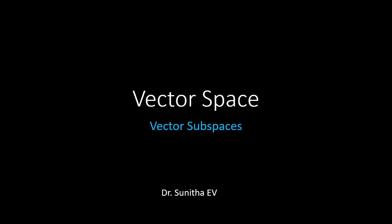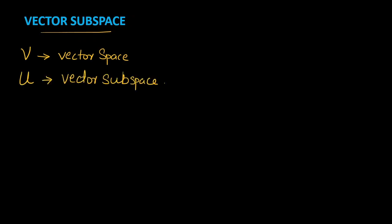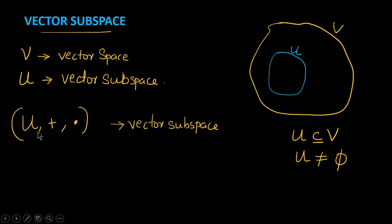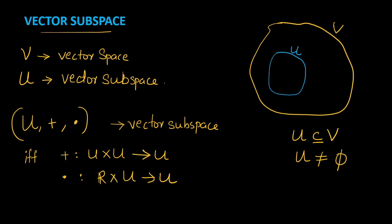Welcome to the session. Today we are going to see what vector subspaces are. Consider a vector space V and let us denote a vector subspace as U. U will be a subset of V, and U should not be a null set — at least one element should be there inside U. The group (U, +, *) is a vector space if and only if: addition such that U × U gives U, and multiplication such that ℝ × U gives U.